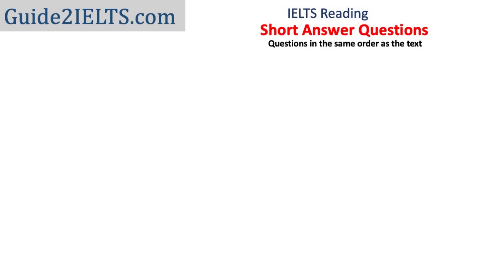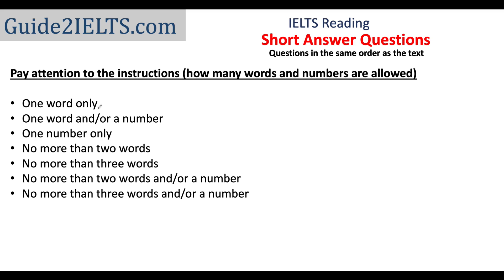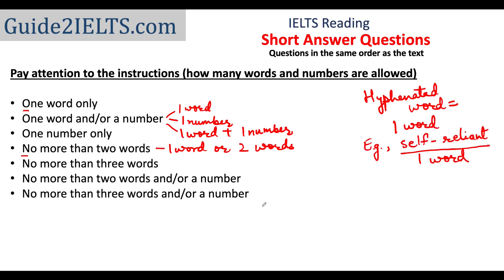The next question type is short answer questions. You need to answer the given questions in a few words. The instruction on how many words or numbers are allowed is extremely important. It could say you are allowed only one word, or no more than two words, etc. If it says 'one word and/or a number,' your answer could be a single word, a single number, or a combination of a word and number. If it says 'no more than two words,' your answer can be one or two words, but not more. A hyphenated word counts as one word, and numbers can be written as figures or words.